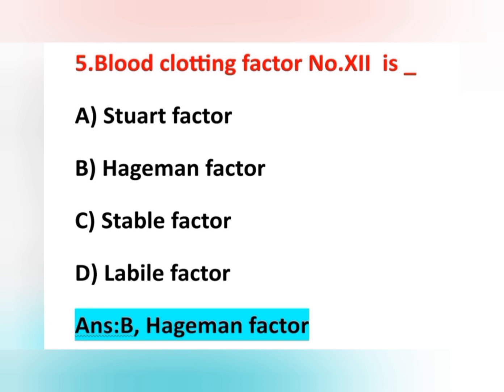Important point: there is no blood clotting factor 6. Factor 7 is stable factor; factor 8 is anti-hemophilic factor A; factor 9 is Christmas factor or anti-hemophilic factor B; factor 10 is Stuart-Prower factor; factor 11 is plasma thromboplastin antecedent or anti-hemophilic factor C; factor 12 is Hageman factor; and factor 13 is fibrin stabilizing factor.